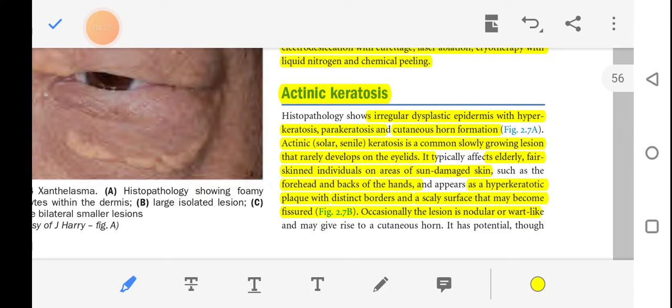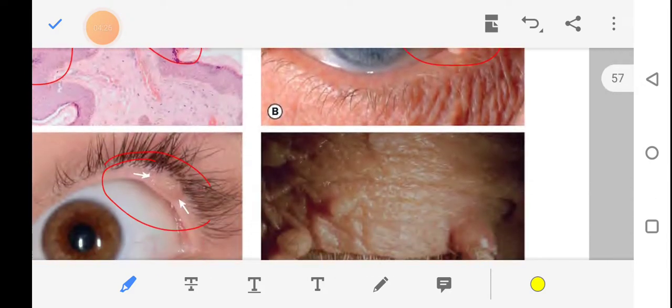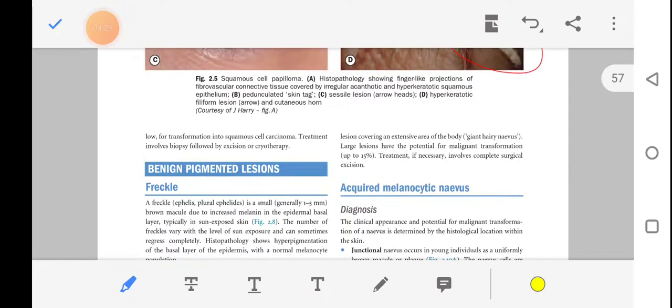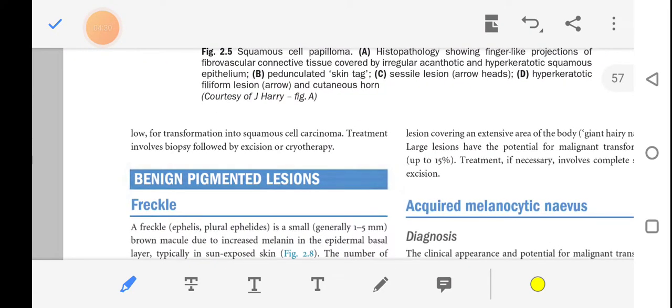Occasionally the lesion is nodular or wart-like and may give rise to a cutaneous horn. It has a low potential for transformation into squamous cell carcinoma. Treatment includes biopsy followed by excision or cryotherapy.